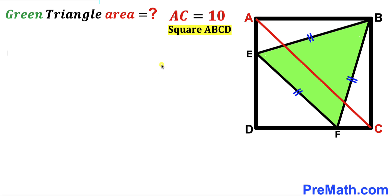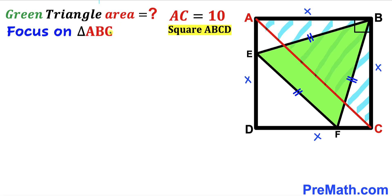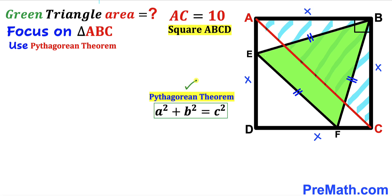Let's get started. Since we are dealing with square ABCD, all side lengths of this square are going to be x across the board. Now let's focus on right triangle ABC and apply the Pythagorean theorem to find the value of side length x. The Pythagorean theorem states a² + b² = c², and in our case the hypotenuse AC is 10 units.